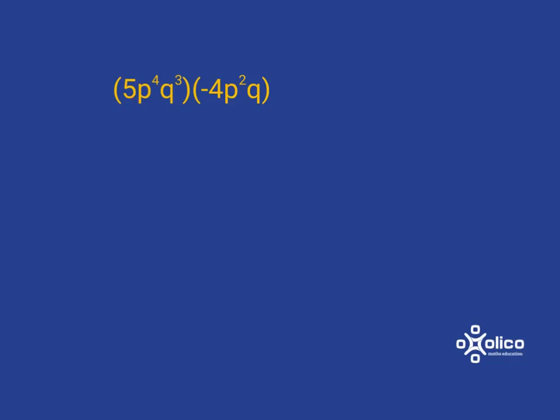Quick reminder of our words: 5 and negative 4 are coefficients. And then also, the other reminder is if we've just got two sets of brackets like this written next to each other with no sign written in between them, we mean multiply.